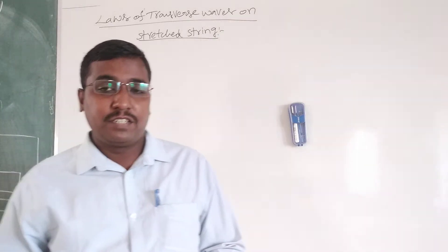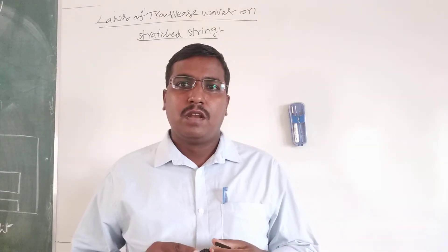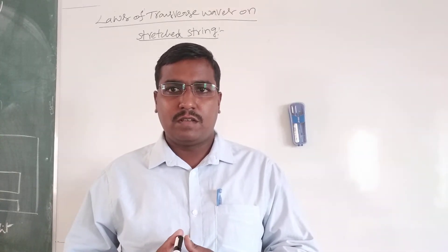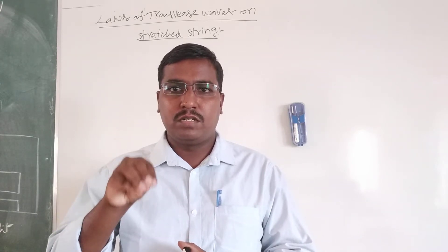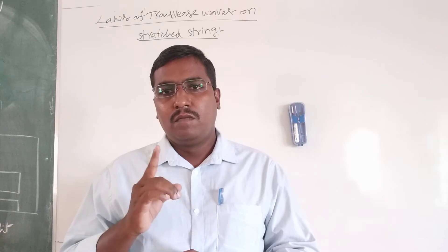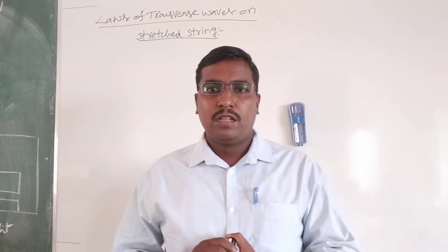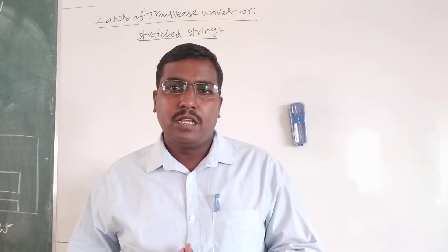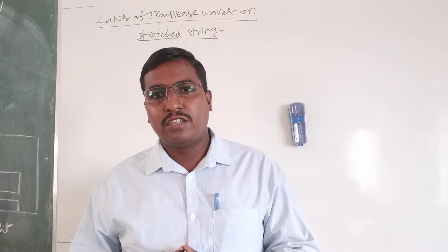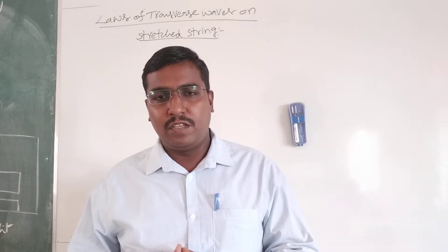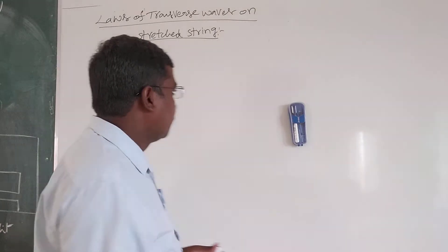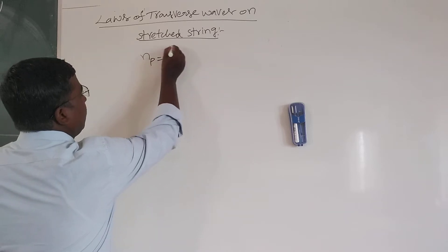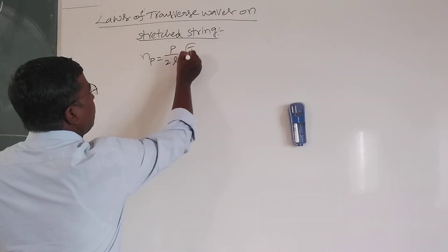Students, next we discuss about laws of transverse waves on a stretched string. We derive the formula: whenever the string vibrates with P loops, the number of oscillations per second, or frequency of the wave, is N_p equal to P by 2L root of T by M.